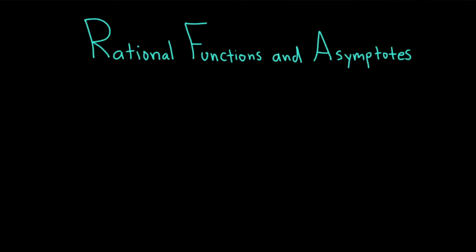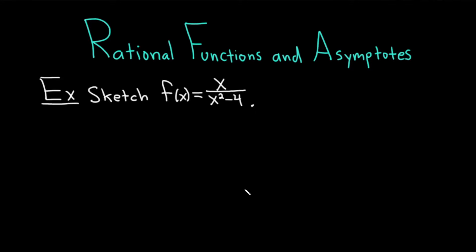Hi, everyone. It's the Math Sorcerer here with Chegg. In this video, we're going to be discussing rational functions and asymptotes. Let's do an example of graphing a rational function. The directions say to sketch f of x equals x over x squared minus 4. Let's work through it.